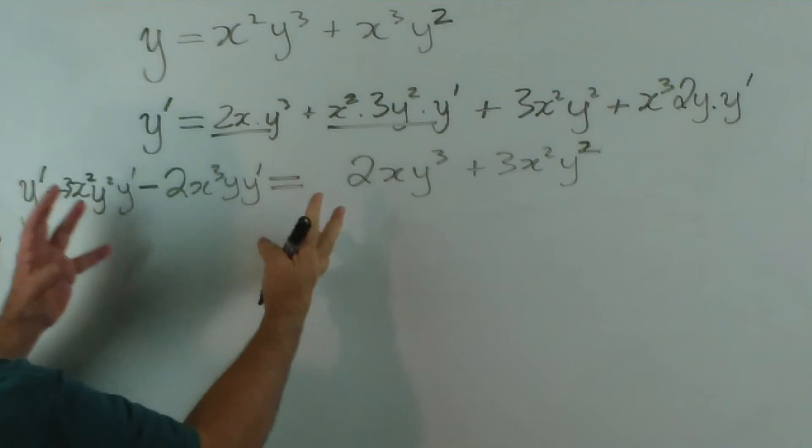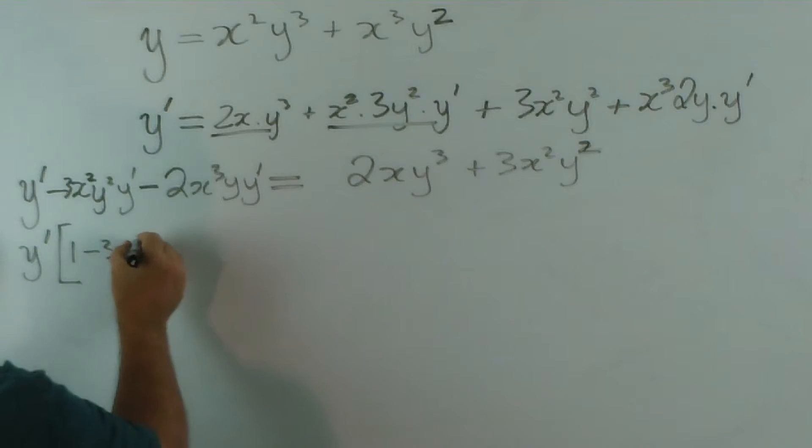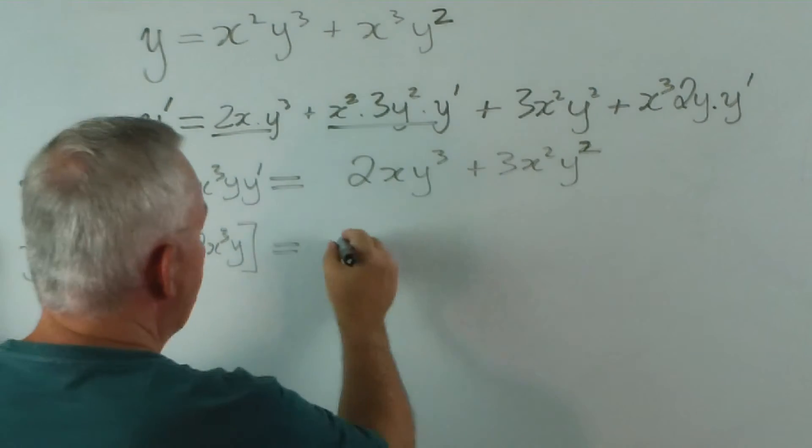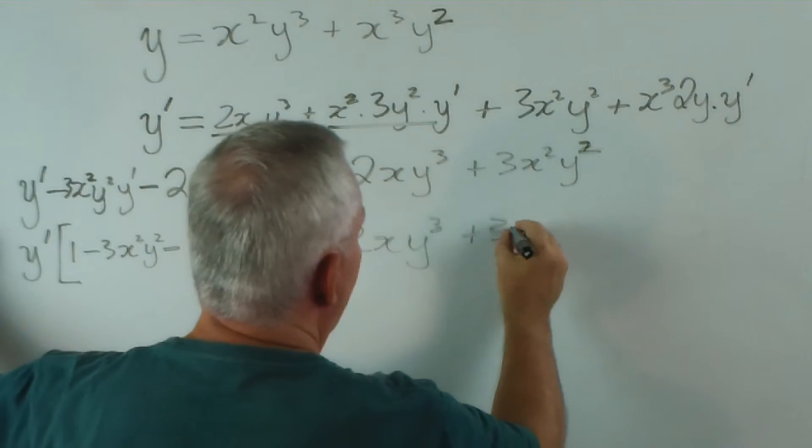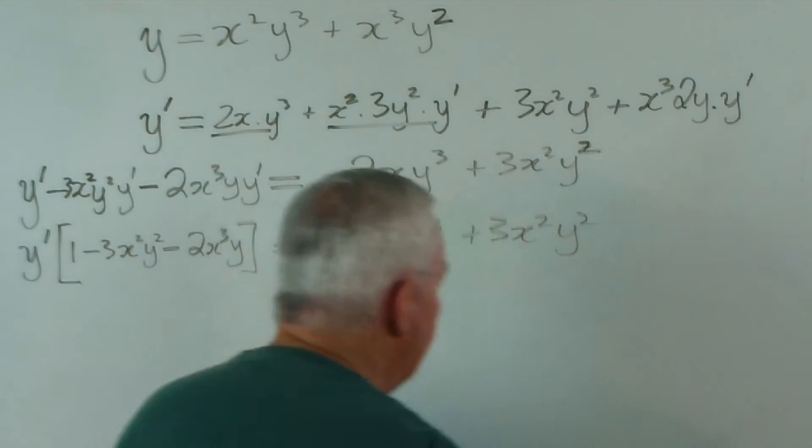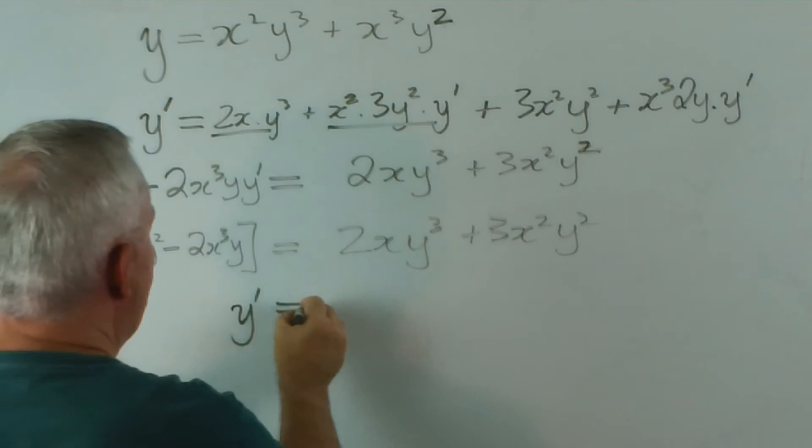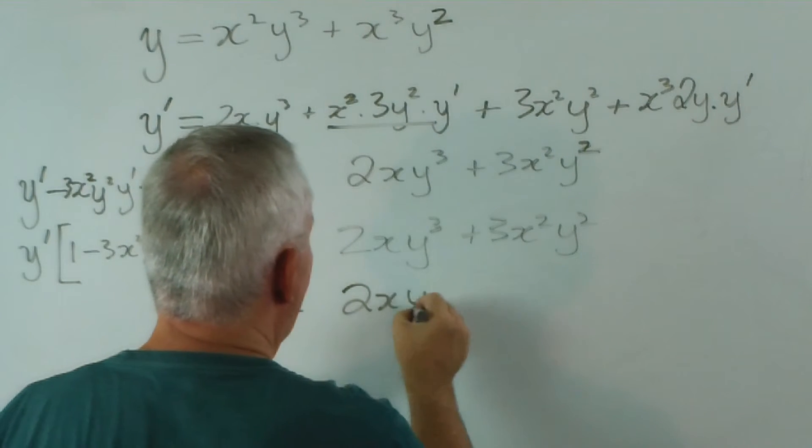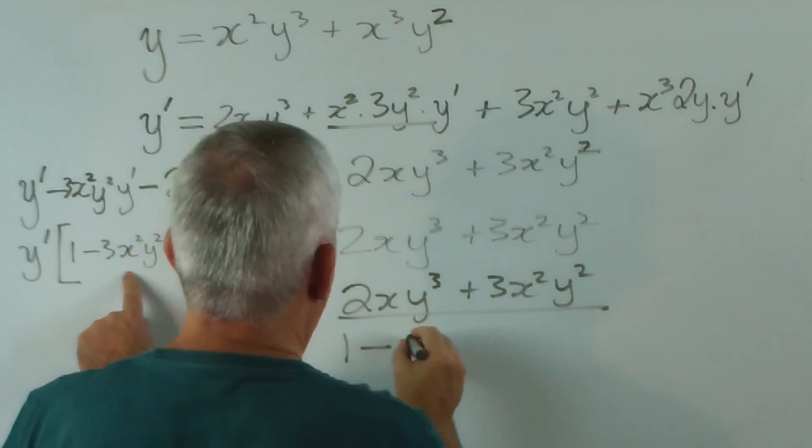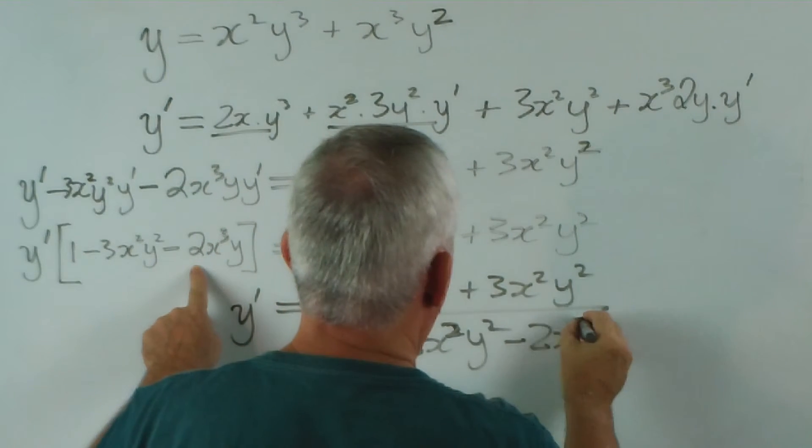We have a y dash in each of these terms, so we take it out as a common factor. y dash outside of 1 minus 3x squared y squared minus 2x cubed y equals this. We now divide both sides by this complete expression and we get y dash equals 2xy cubed plus 3x squared y squared over 1 minus 3x squared y squared minus 2x cubed y.